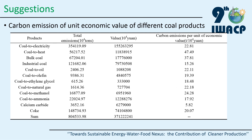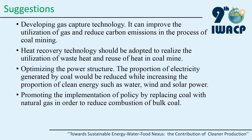From this table, we can find that high total carbon emissions do not necessarily mean high carbon emissions per unit of economic value for different products. For coal to electricity, total emissions rank first, while emissions per unit economic value also rank first, followed by coal to heat, bar coal, and coal to methanol. Therefore, different strategies of carbon emission reduction exist depending on the analysis perspective.